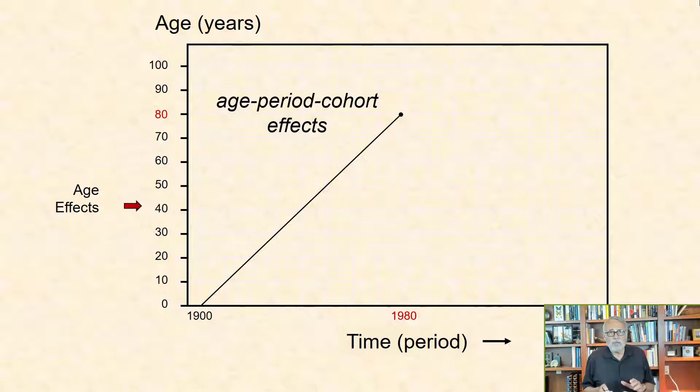Age effects: The biological origin of age effects usually endows them with a generality and regularity. In other words, the biology of 10, 45, and 70-year-olds, for example, has remained essentially the same since the dawn of humankind.